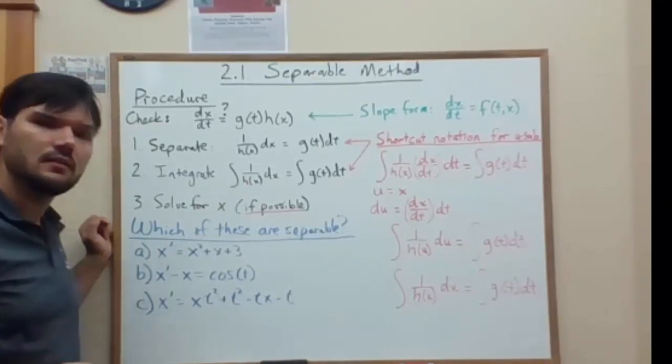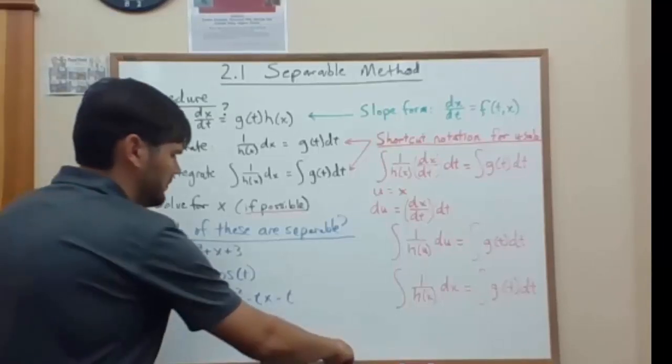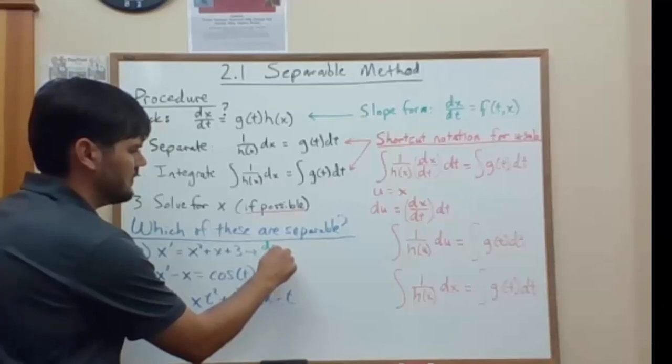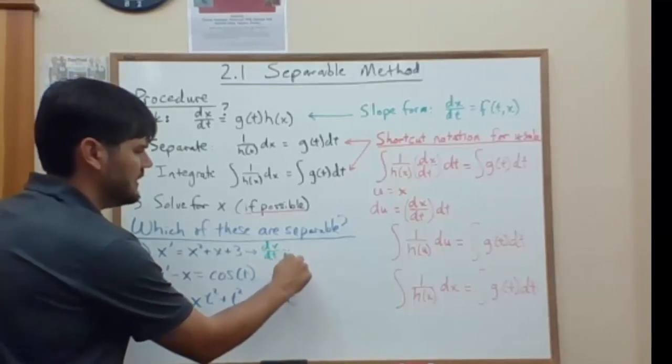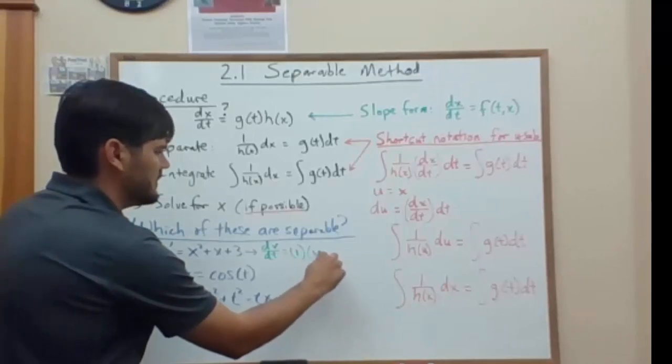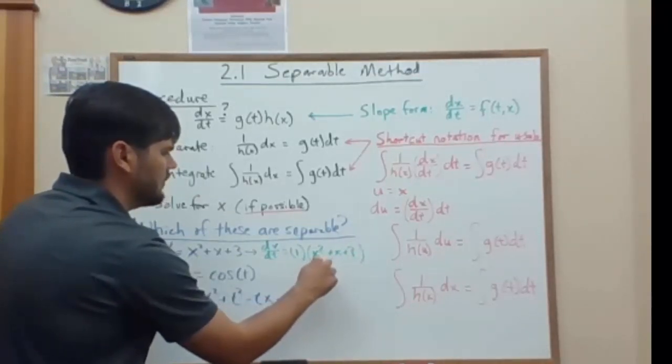but a constant like 1 can be a function of t. So I can simply write this as dx dt equals 1, that's my function of t, times x squared plus x plus 3.